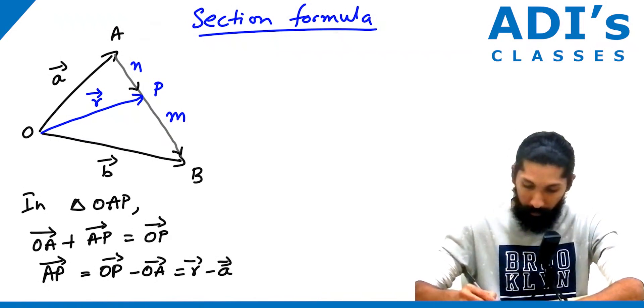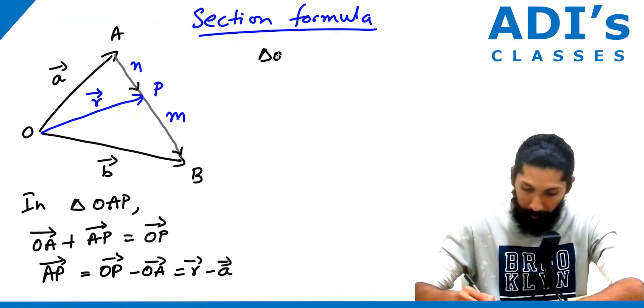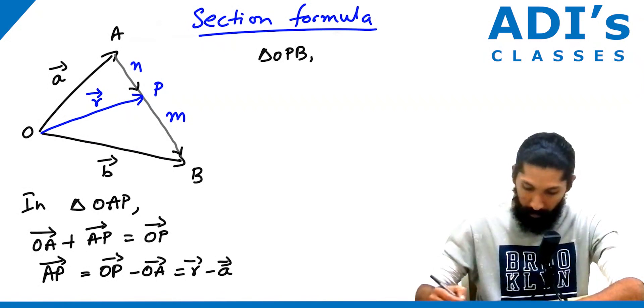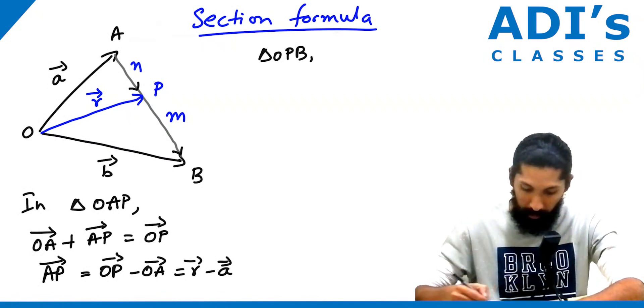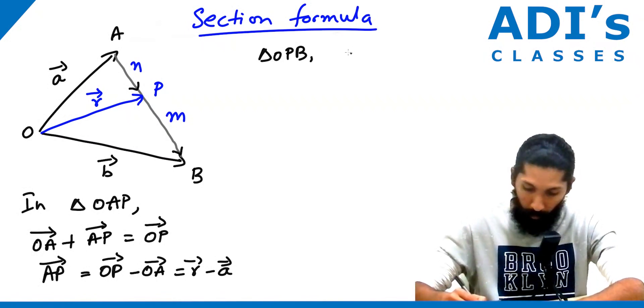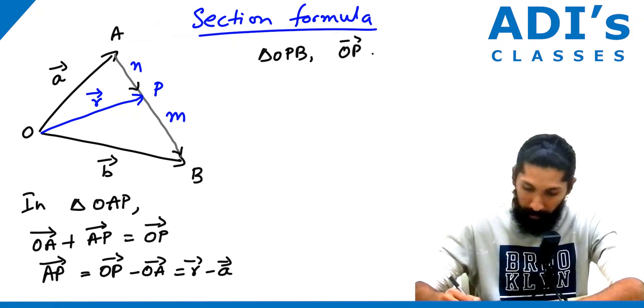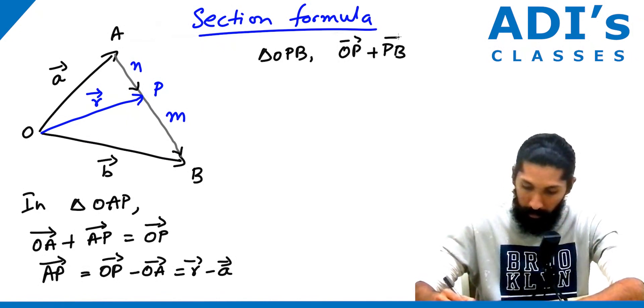Next, we'll take triangle OPB. In this triangle, we have OP plus PB equals OB, vector OB.